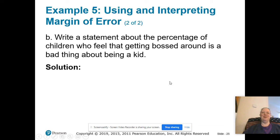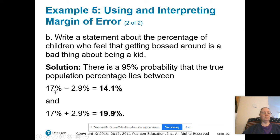Write a statement about the percentage of children who feel that getting bossed around is a bad thing about being a kid. So remember, 2.9% above, 2.9% below. We're going to do 2.9% above, which means we add it on, and 2.9% below, we subtract it off. So that means between 14.1% and 19.9% of children think that getting bossed around is a bad thing. And we are 95% confident that that is the case.